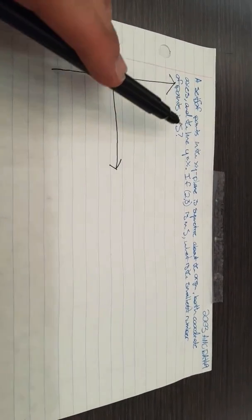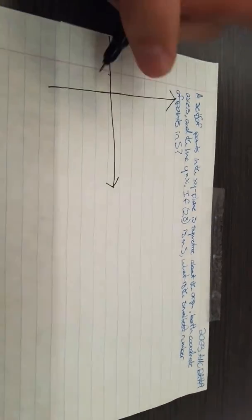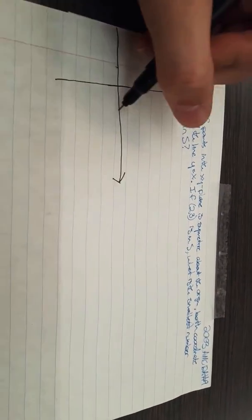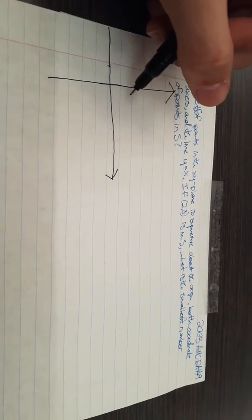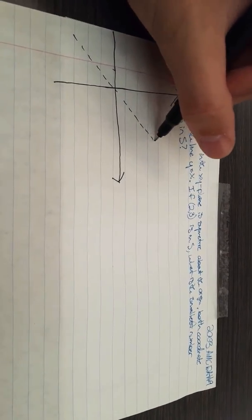A set S of points in the XY plane is symmetric about the origin, both coordinate axes, and the line X equals Y. I'm going to draw that.